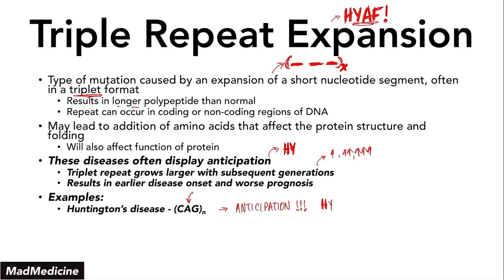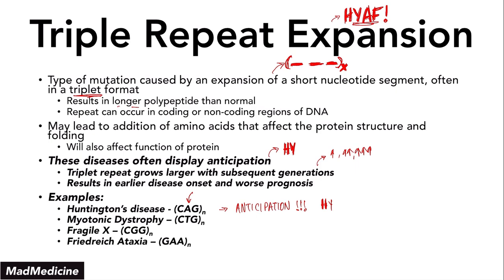The other diseases with triplet repeat expansions are myotonic dystrophy, which has repeats of CTG; fragile X syndrome with repeats of CGG; and Friedreich's ataxia where you'll see repeats of GAA. These are very high yield. Write them down, remember them, and make sure you understand these four diseases and their associated repeats. It is very possible that on the exam you will be given the DNA segments and need to identify the repeats and know the associated condition.